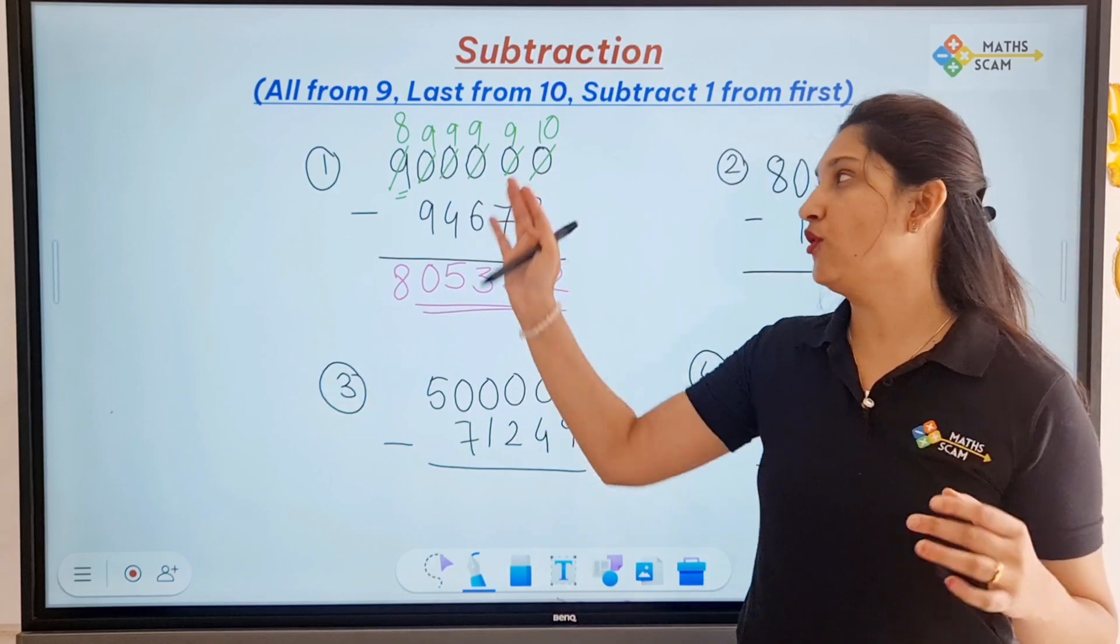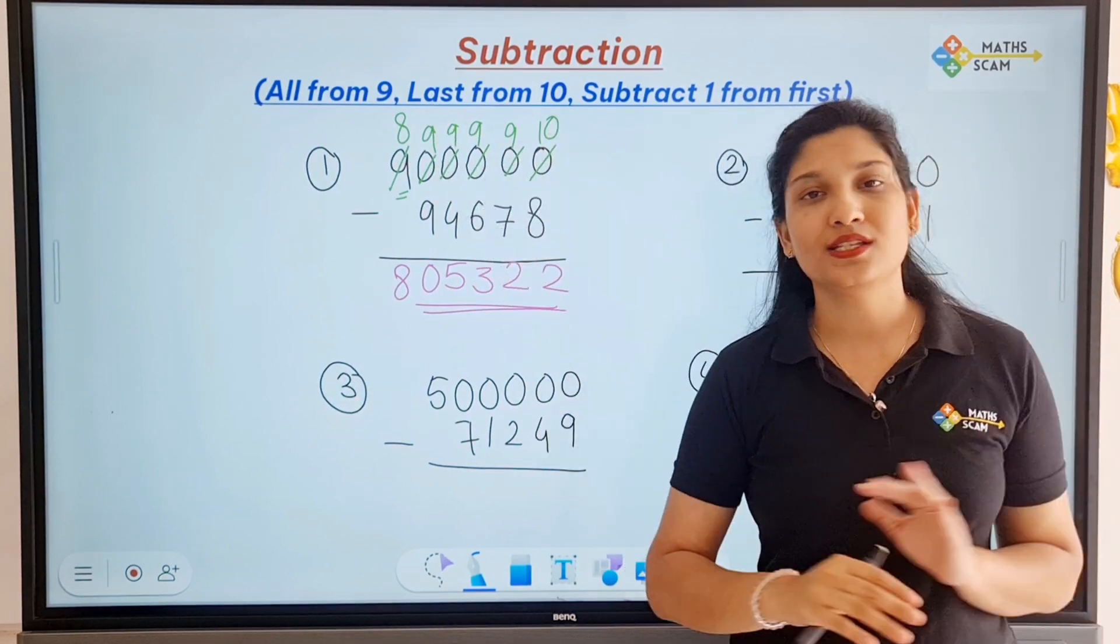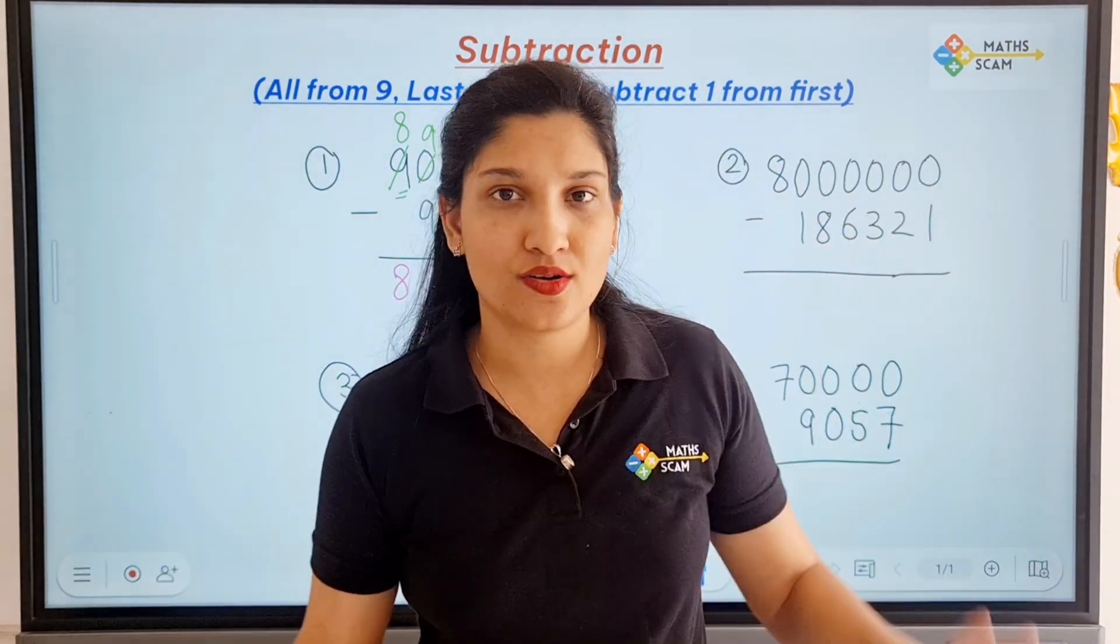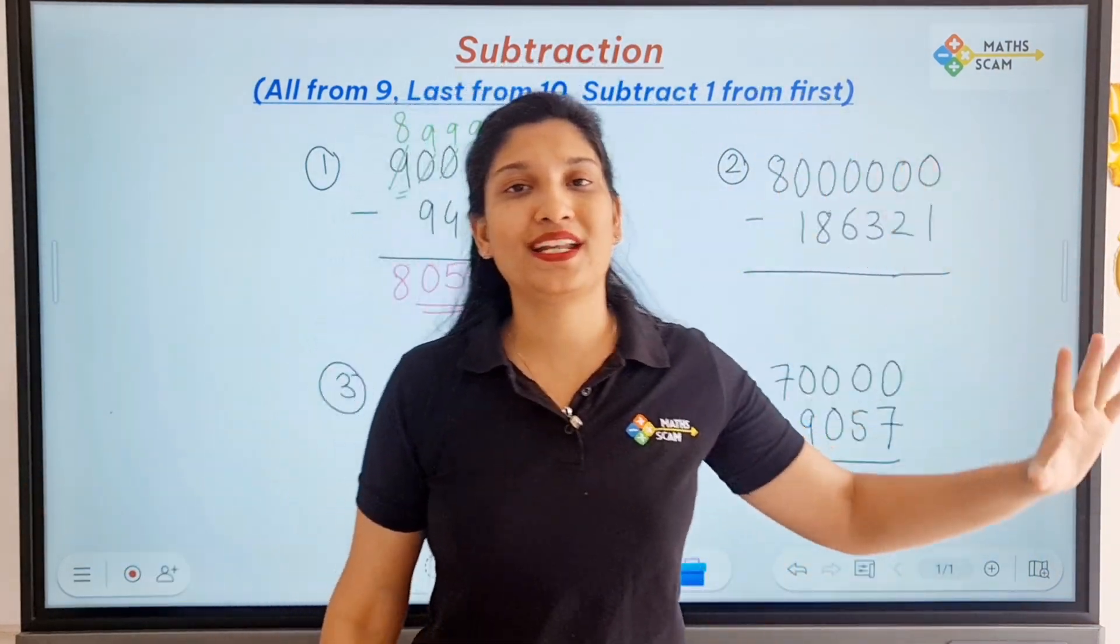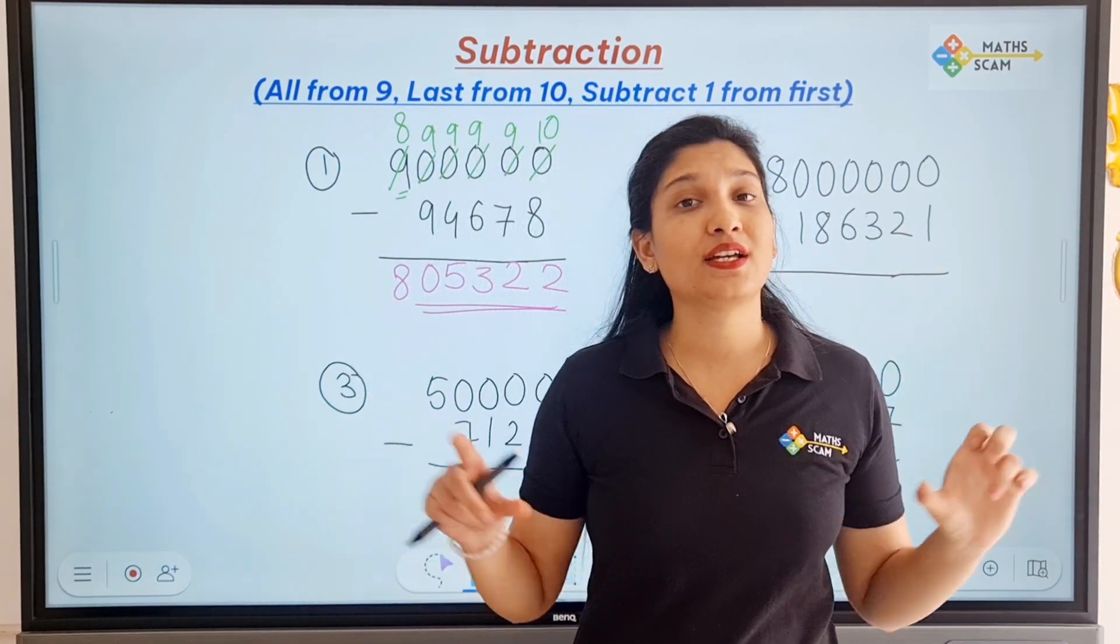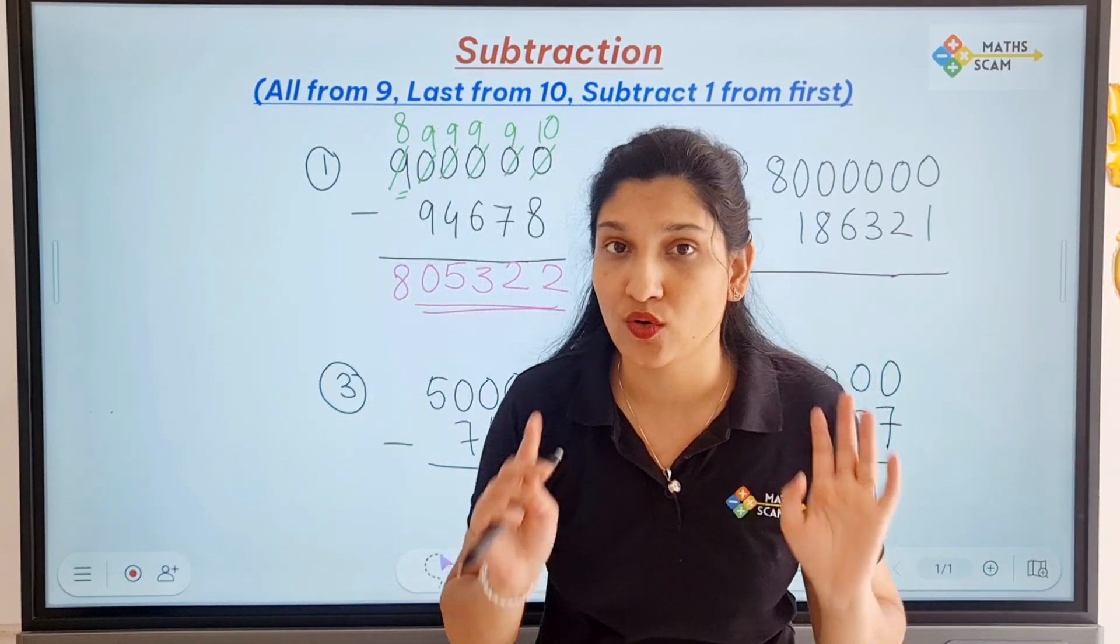Now the next question we are going to do with mind. Remember one thing, the unit digit we are going to subtract from 10, the middle digits, if the middle digits are 0 only.